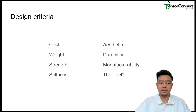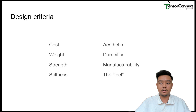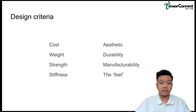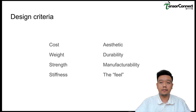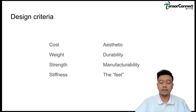First we must consider the design criteria during mechanical engineering design, which are cost, weight, strength, stiffness, and so on. You can check this from the slide and always come back to this checklist to verify whether your material is sufficient for each criterion. The criteria itself is flexible — you can prioritize one criterion over another based on your own requirements or specifications.